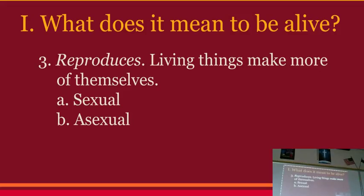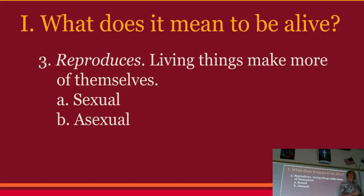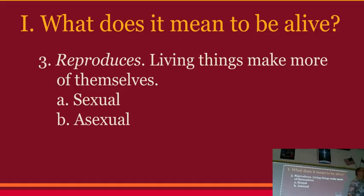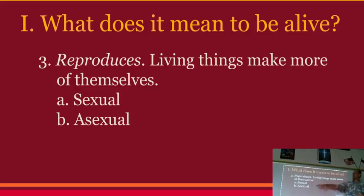Reproduction comes in two flavors: sexual and asexual. Sexual reproduction requires two individuals coming together and mixing their genes for the next generation. Asexual reproduction is where that's not necessary — an individual can just reproduce on its own. Some plants don't require any gene mixing; the baby just grows out of the roots of the parent plant. There are different kinds of reproduction.